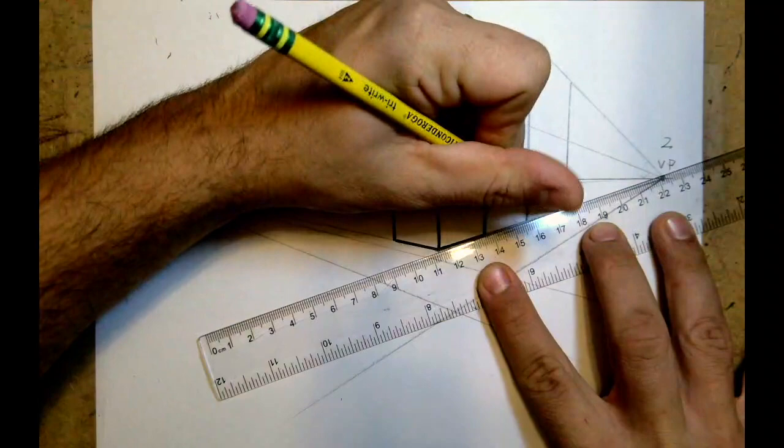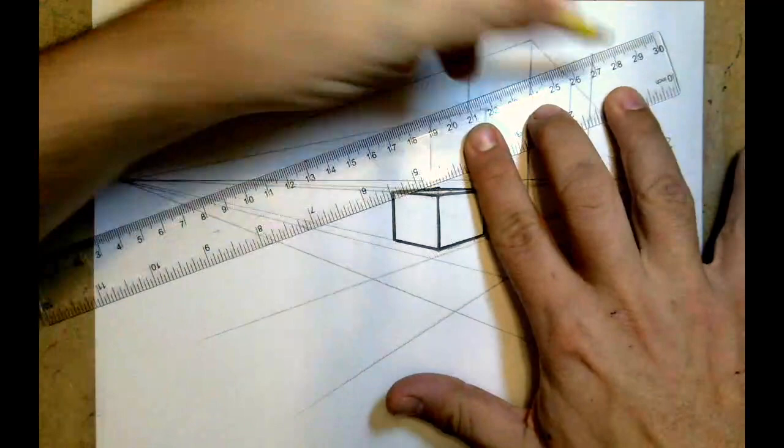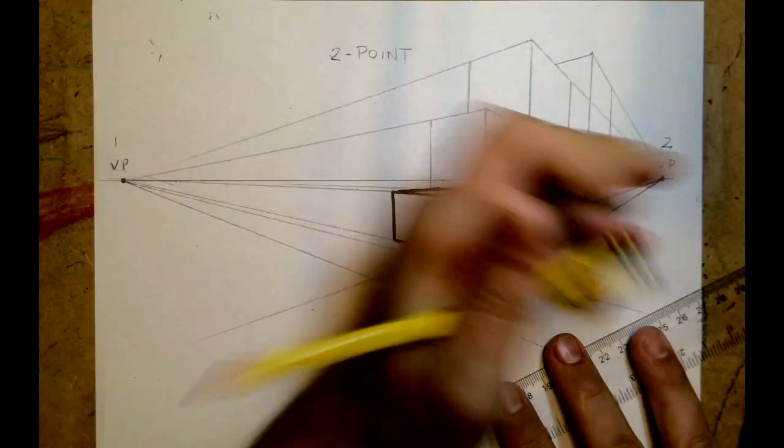So I'll be creating buildings to the left of my original one and then to the right. Again, drawing a vertical line, bringing the top edge back to the left and to the right, creating the width of my edges. And remember, as I overlap, I don't have to completely draw my boxes or cubes out.